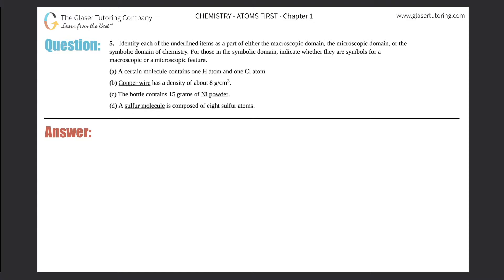Number five: identify each of the underlying items as part of either the macroscopic domain, the microscopic domain, or the symbolic domain of chemistry. For those in the symbolic domain, indicate whether they are symbols for a macroscopic or microscopic feature. There are four parts, so let me quickly label them A, B, C, and D. We covered these more in depth in the last question, number four in the first chapter, but let's quickly go over these now.